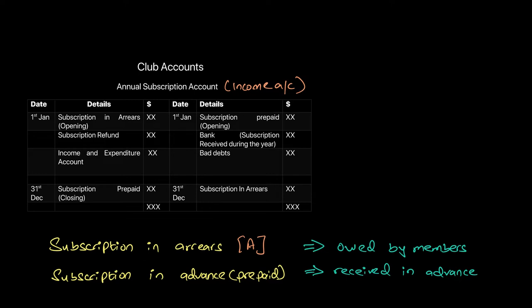Similarly, some members might have paid the subscription in advance — that subscription might have been received in advance by the club. Now the club has received this money but has not provided services against it. So this becomes an obligation for the club, because it needs to provide services having already received that money from the members.